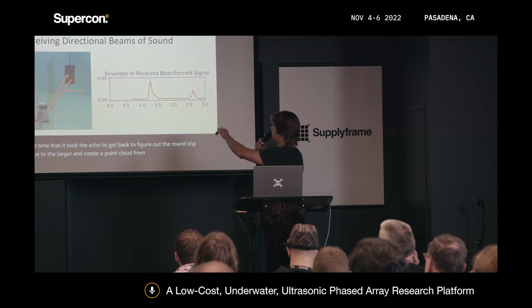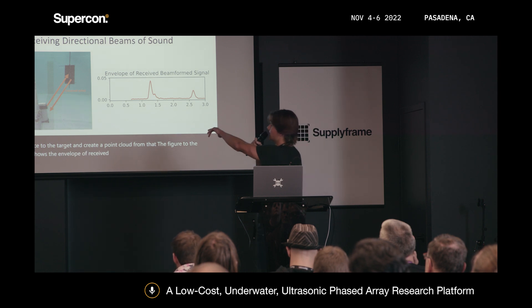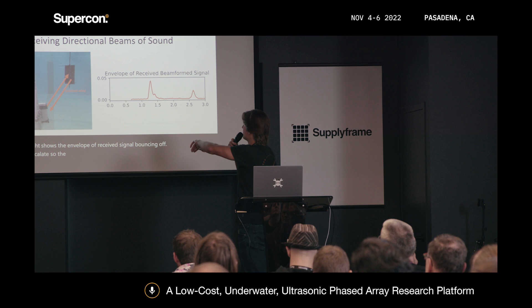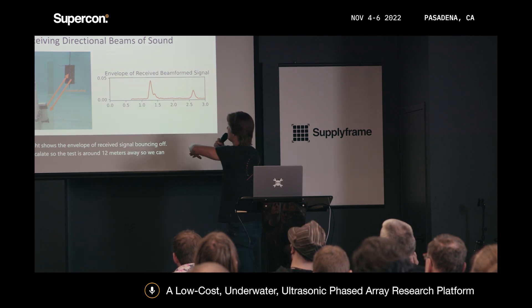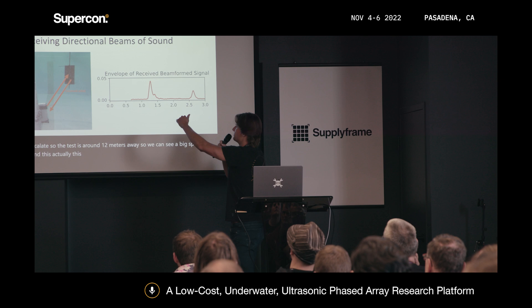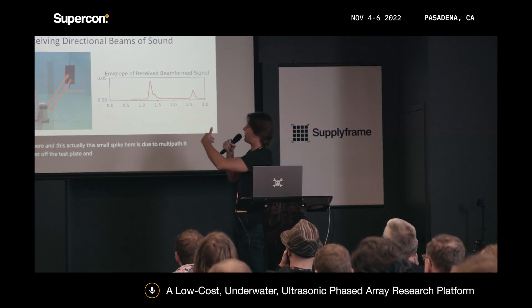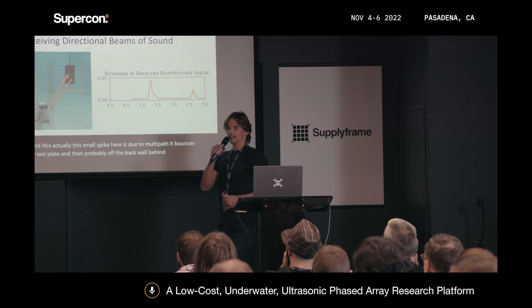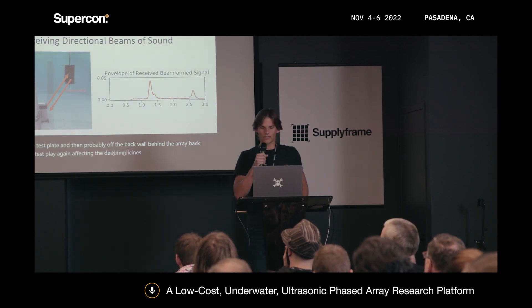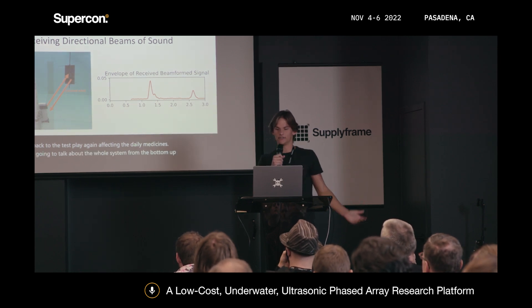The figure to the right shows the envelope of a received signal bouncing off the steel test plate. The test plate is around 1.2 meters away, so we can see a big spike there. The small spike is due to multipath — it bounces off the test plate and then probably off the back wall behind the array and back to the test plate again, effectively doubling the distance. I'm going to describe the whole system from the bottom up, covering three sections: the element that creates sound, the circuit that controls it, and how those circuits create a directional beam.